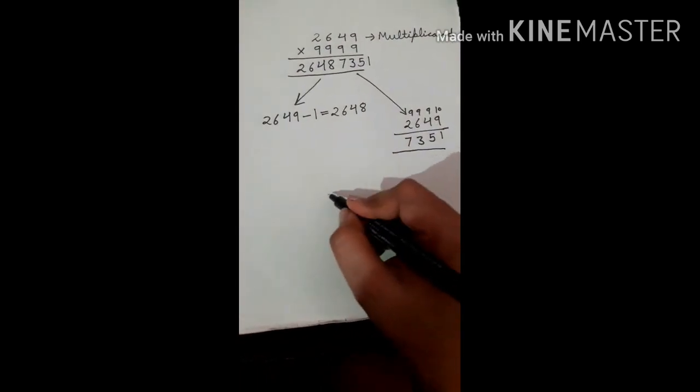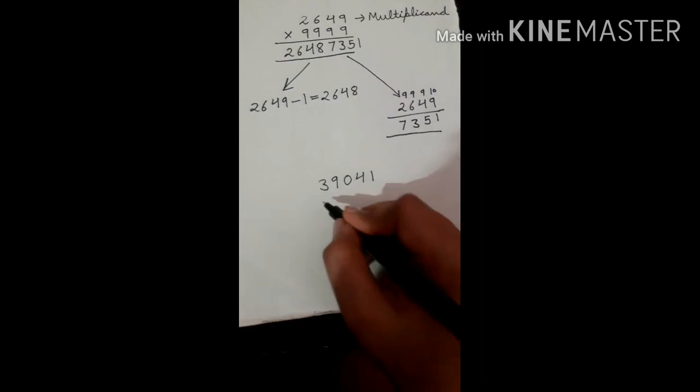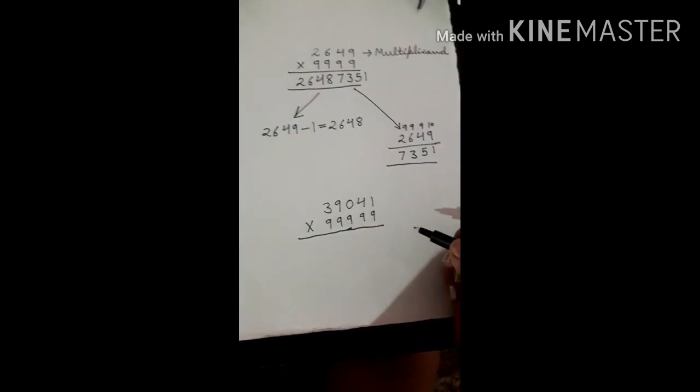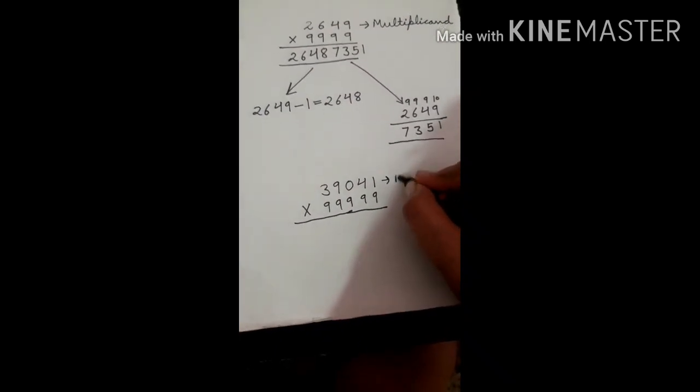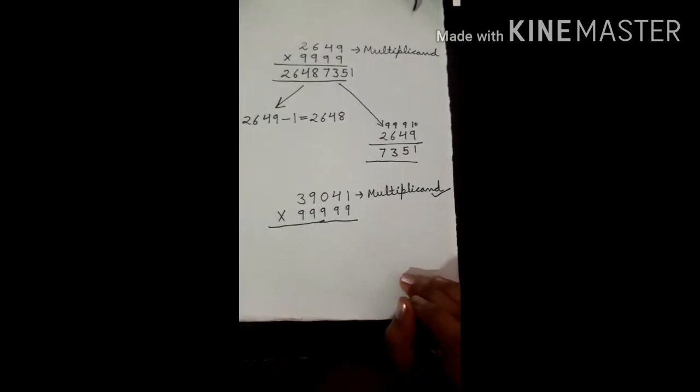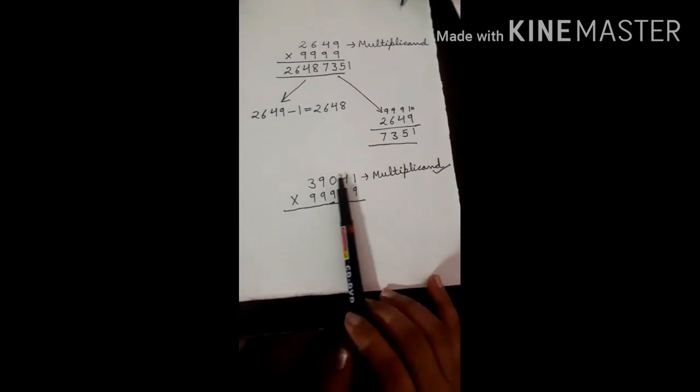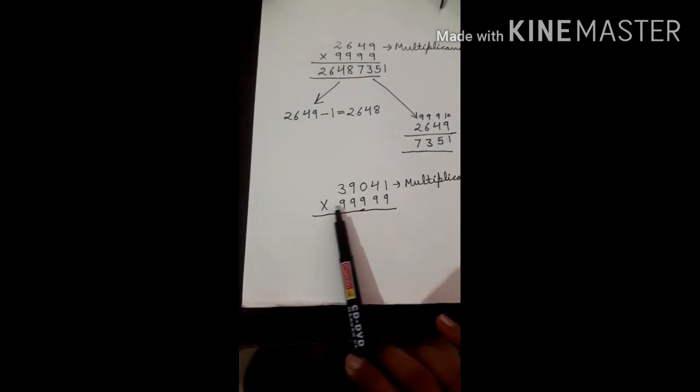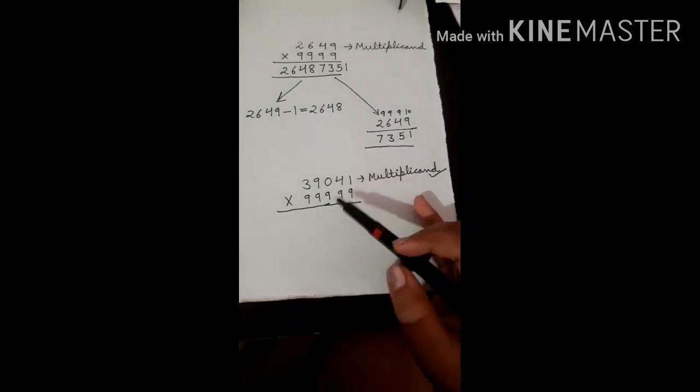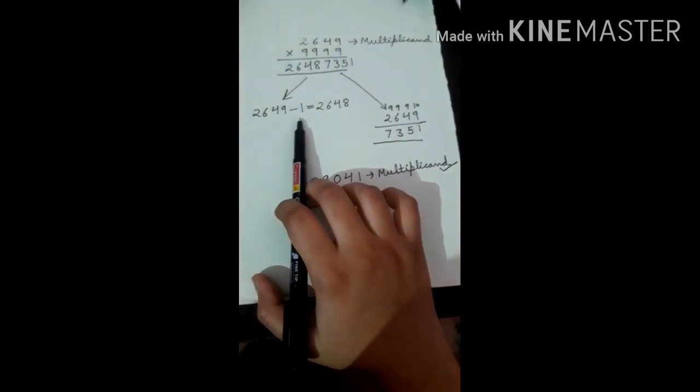As you can see, let's take one more example: 39041 multiplied by 99999. We will do this orally. As this is your multiplicand, we use only the multiplicand. The trick is only applicable when the number of digits in the multiplicand and the multiplier are same, and the multiplier should contain all digits 9. As these are applicable, the method is applicable. We will start.